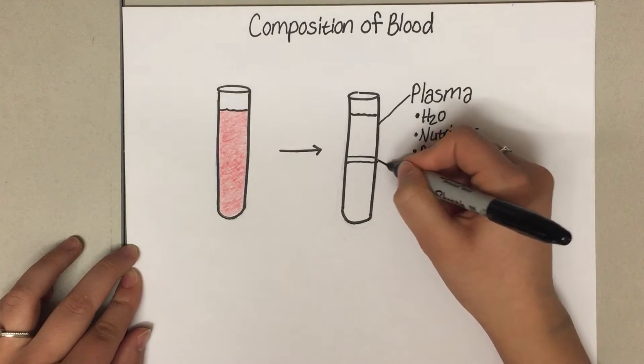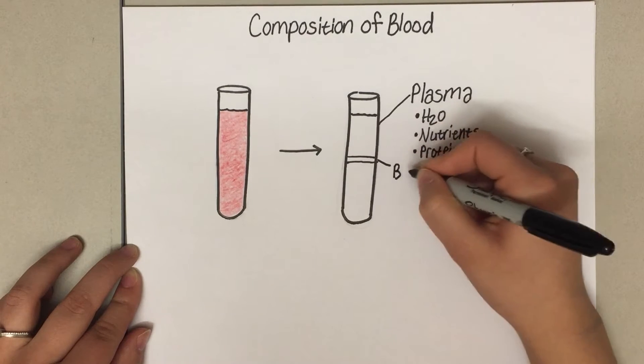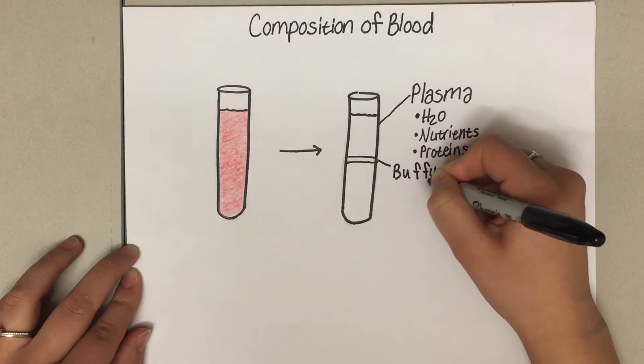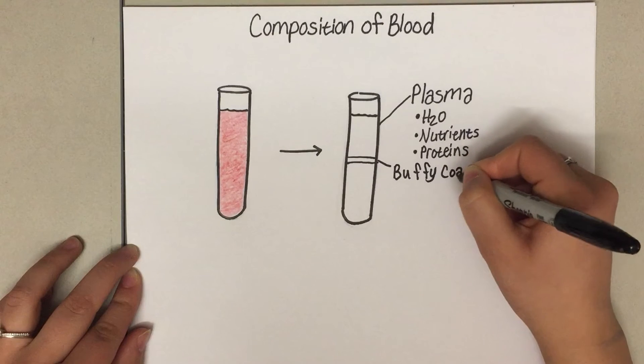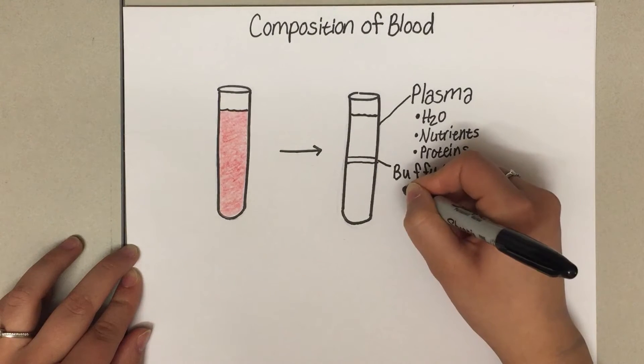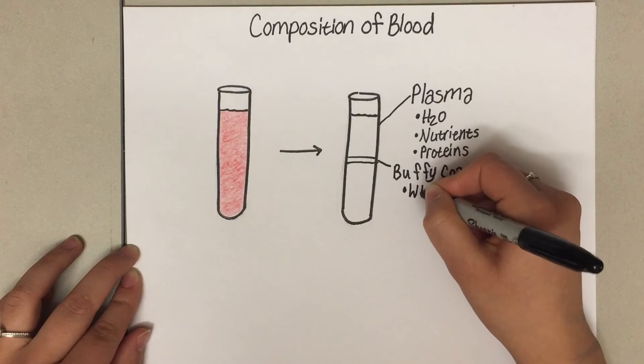This next really tiny layer is called the buffy coat. The buffy coat, though tiny, contains some very important factors like white blood cells and platelets.